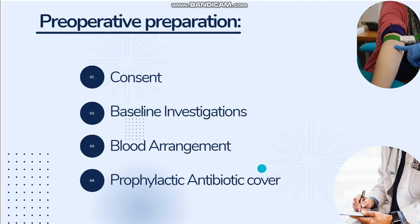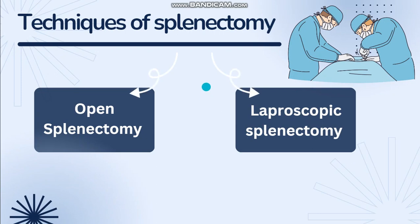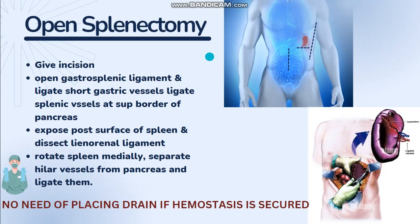Prophylactic antibiotic cover is important for the prevention of post-operative sepsis. There are two basic techniques of splenectomy: open splenectomy and laparoscopic splenectomy. In open splenectomy, first of all we will give an incision. There are three basic types of incision for this procedure: midline incision, left transverse incision, and thoracoabdominal incision.